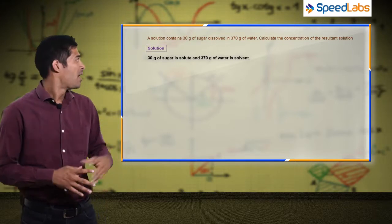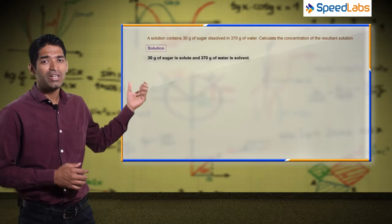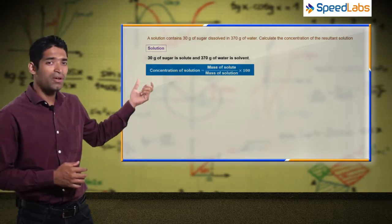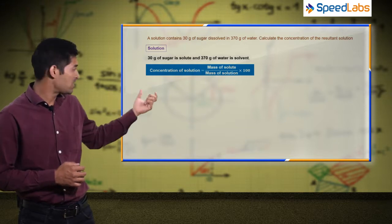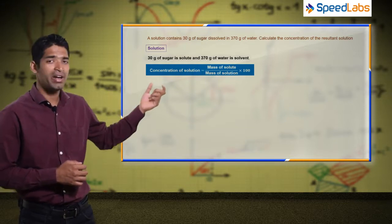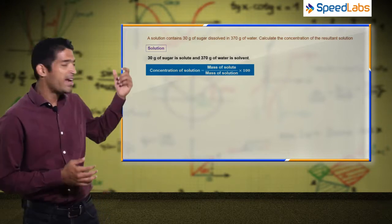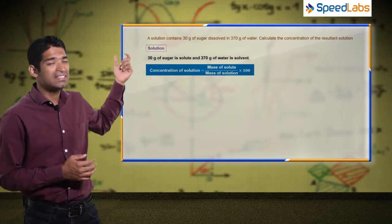The concentration of solution is found by using this formula: mass of solute divided by mass of solution into hundred. A common error expected here is you divide the mass of solute, that is 30 grams of sugar, by 370 grams.